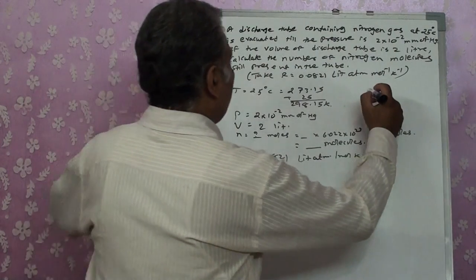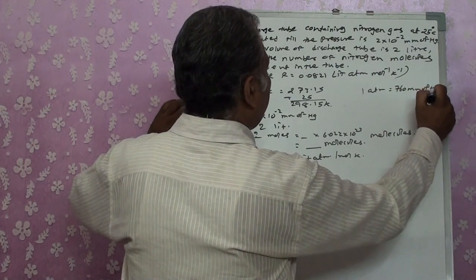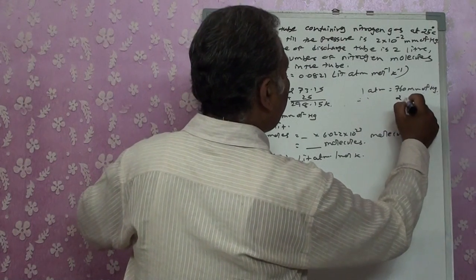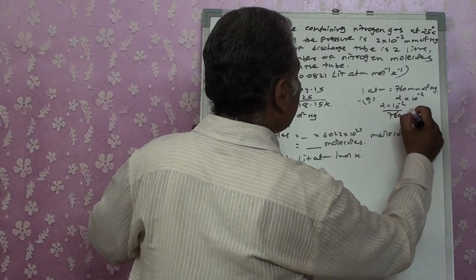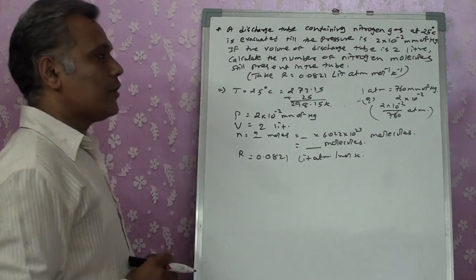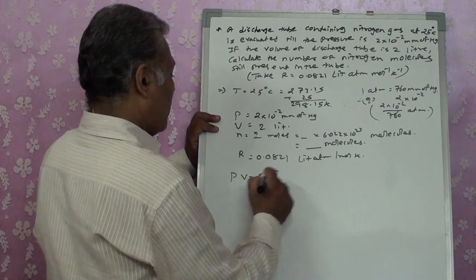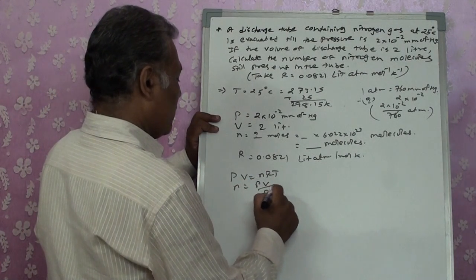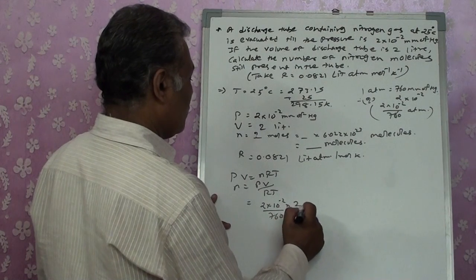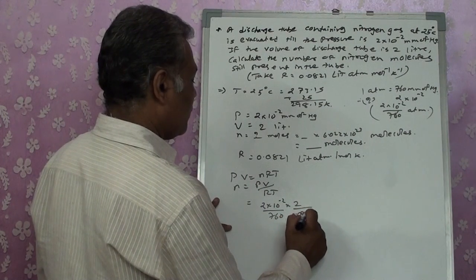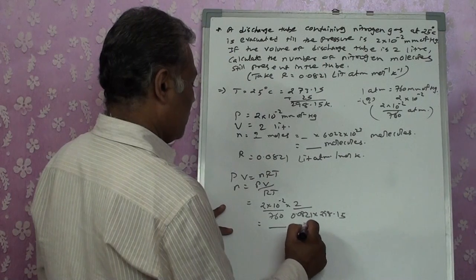Using PV = nRT, n = PV/RT: n = (2 × 10⁻²/760 × 2) / (0.0821 × 298.15). Calculate this to get the number of moles. If your units are wrong, your calculation will be wrong — make sure units are consistent. We get some value A moles.